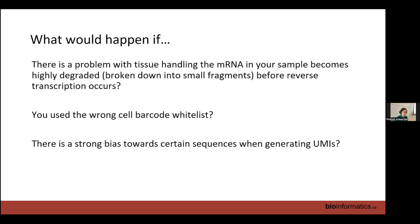If you use the wrong cell barcode whitelist, you'd be throwing out a large proportion of your sequencing because reads wouldn't match any cell barcode. You'd end up with half or a third the number of cells you were expecting, and the rest would have been discarded by CellRanger or whatever quantification tool you're using.